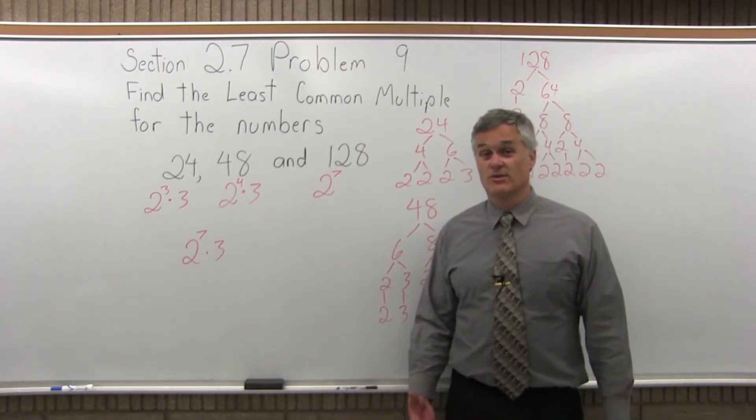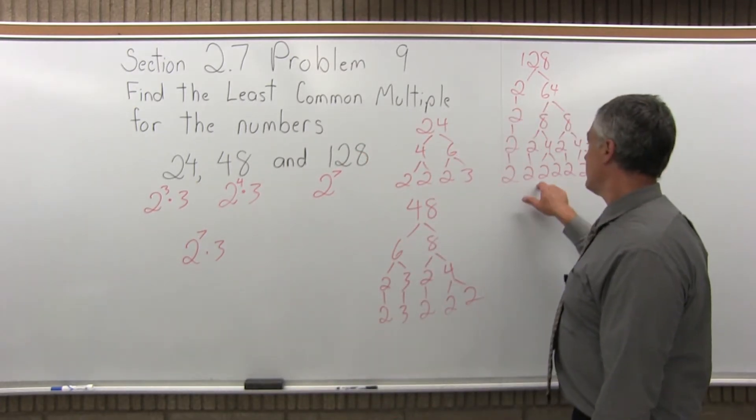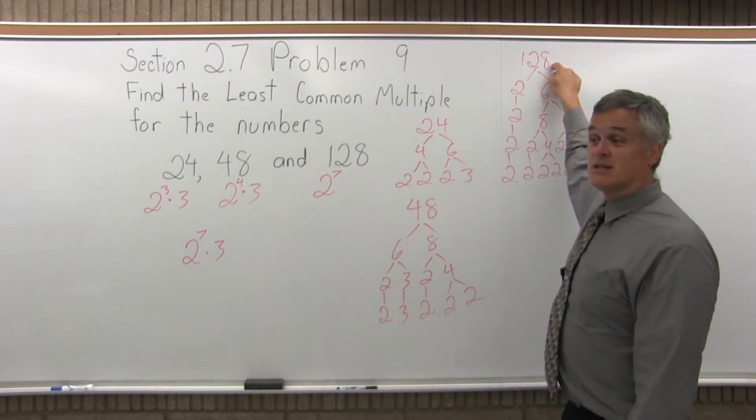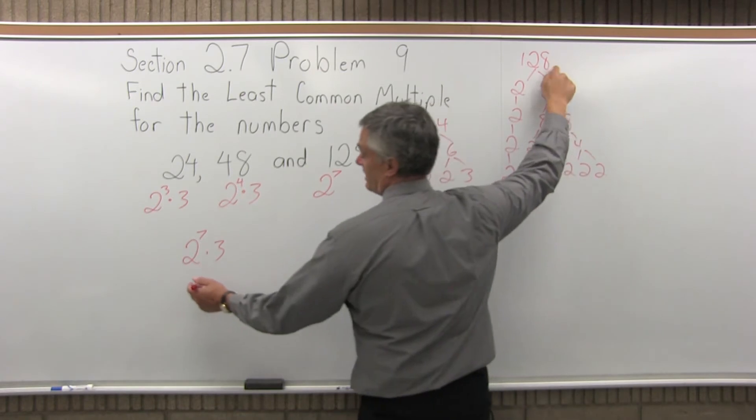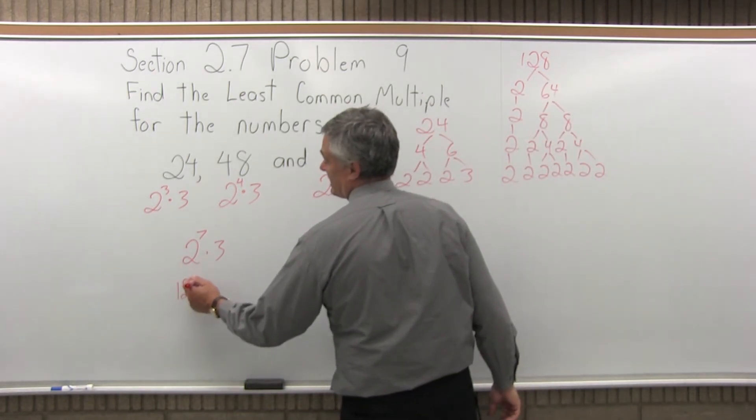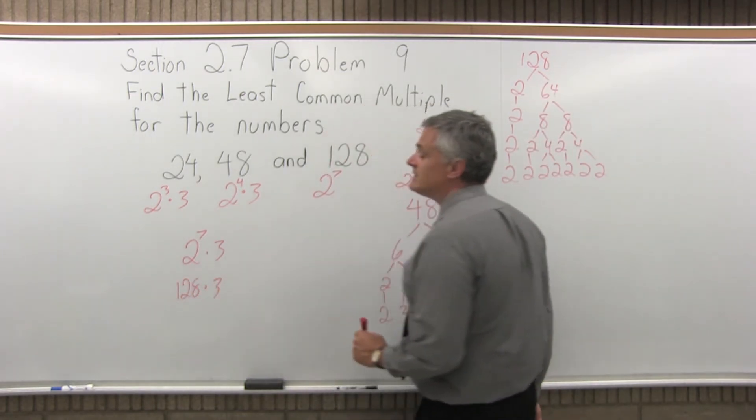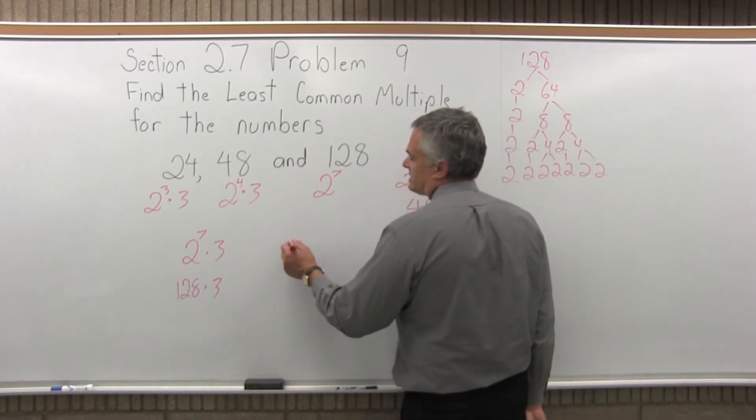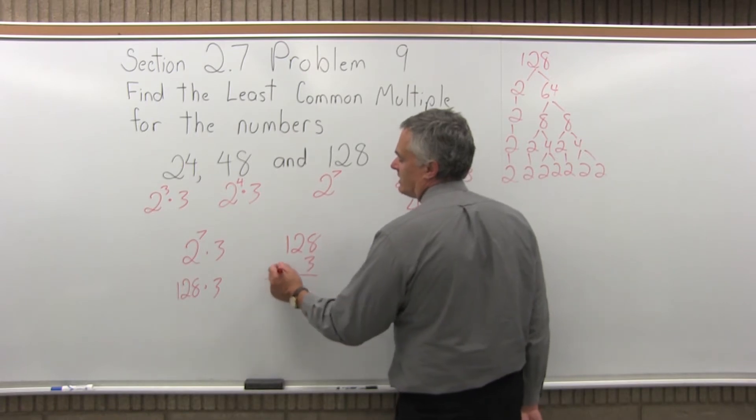I have to multiply out 2 to the 7th times 3. Fortunately, I don't have to do 2 to the 7th again because I have it here. I know seven 2s multiplied together is 128. So when I multiply it out, I can just do 128 times 3. I could probably figure that out without writing it down, but let's just take the time and write it down and do it out.